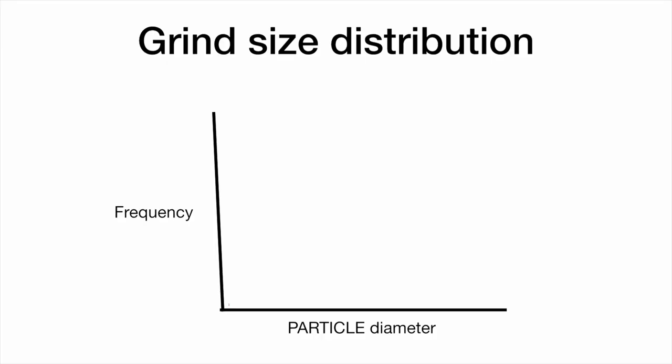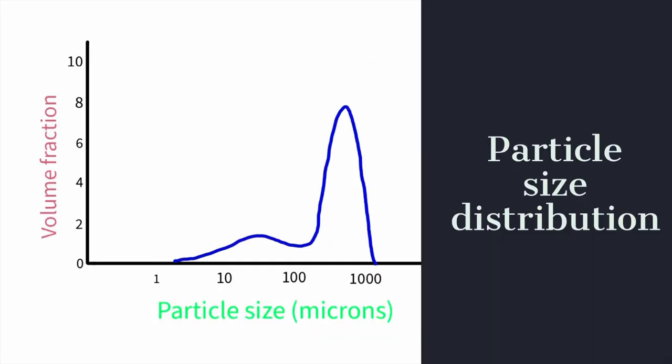What you can then do is plot the size of these particles on a graph and look at how frequently they occur. This is what we call a particle size distribution curve.